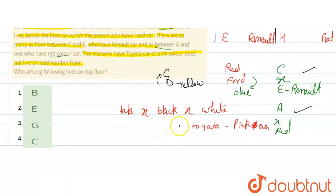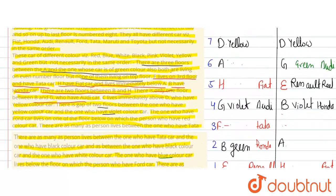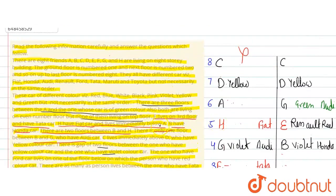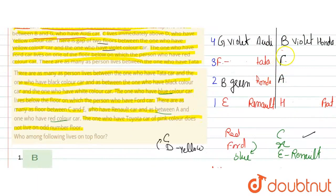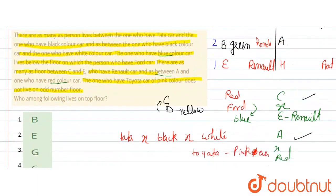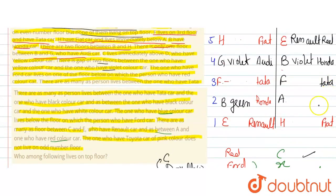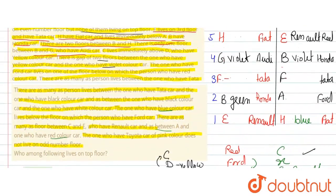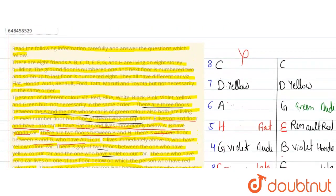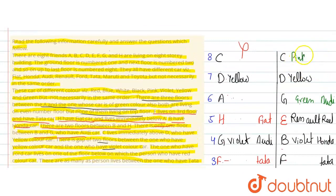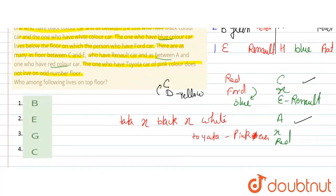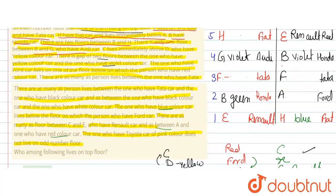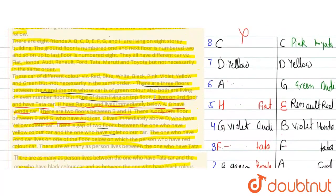F is on the third floor with the Tata car confirmed. So red is placed, Ford comes below red, and blue comes below Ford — these positions are now confirmed. Toyota has the pink color car, and C gets the Toyota car with pink color. Then, checking Tata, black, and white — Tata and black have the same gap as black and white, so positions for black and white are confirmed.